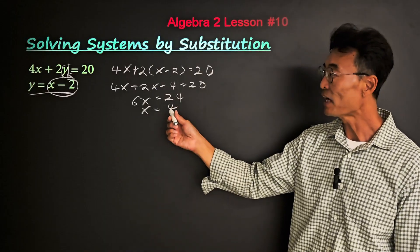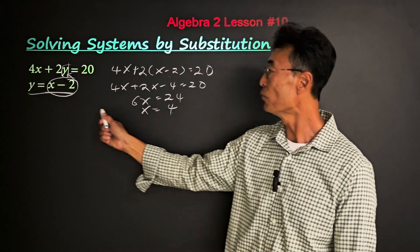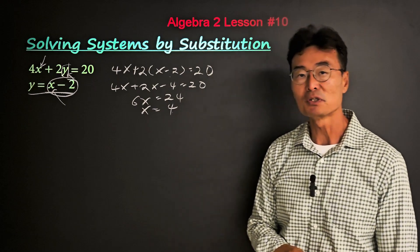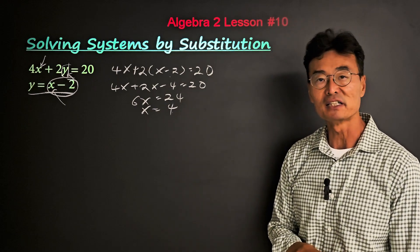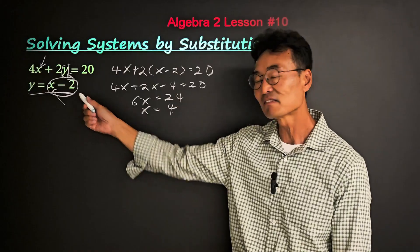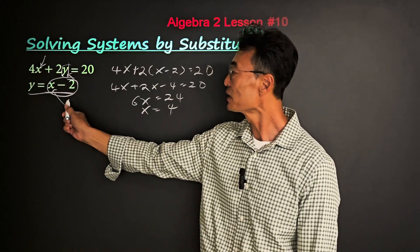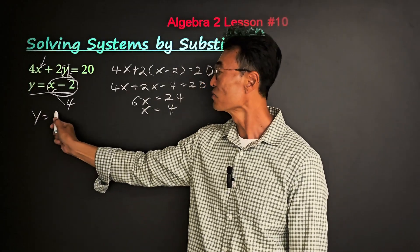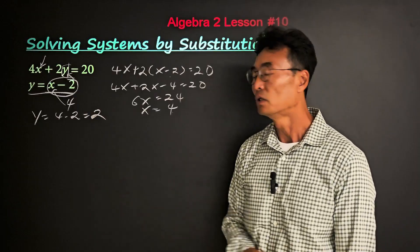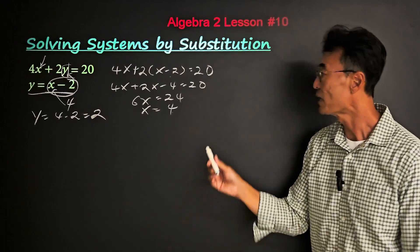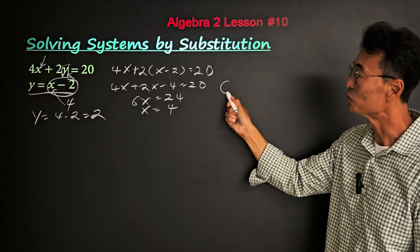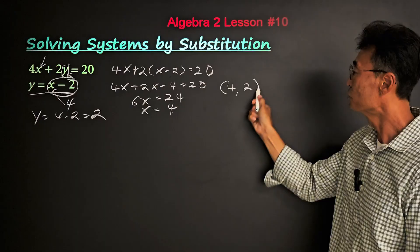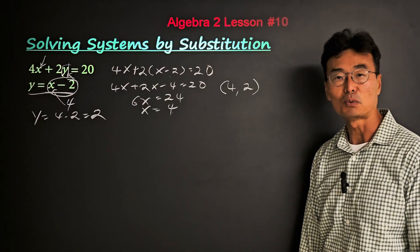Then to solve for the value of y, we'll take that 4 and plug it into either equation. It doesn't really matter; you want to plug it into whichever is easier for you. In this case, the second equation is better. So we'll take the 4, plug it in for x where we get y equals 4 minus 2, or 2. Therefore, our final answer is x equals 4 and y equals 2.